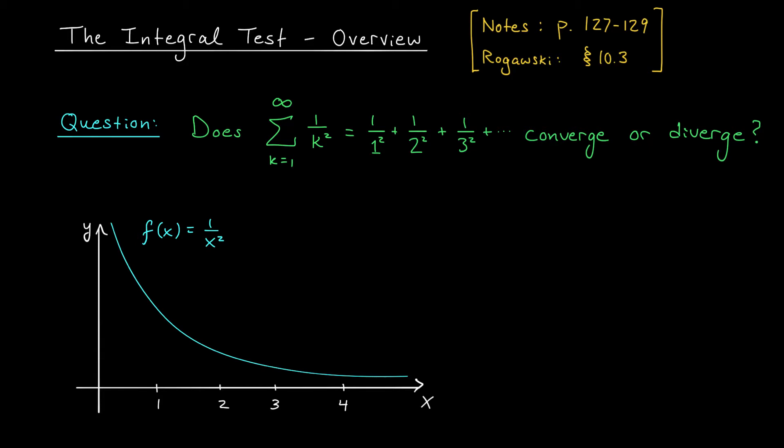If the improper integral converges, so too does the series. If the improper integral diverges, so too does the series. Often, checking the convergence of the integral is a little bit easier. This test can't be used all the time — it only applies in certain situations, and it won't tell you the sum of the series, just whether the series converges or diverges. However, if the series does converge, we can use the value of that related integral to estimate the sum. This test is very fittingly called the integral test.